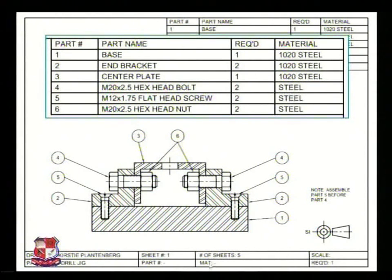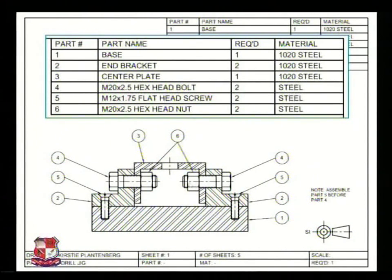Scale, number of sheets, sheet number, drawn by, part number, etc. are written on this drawing sheet. So this is the typical example of an assembly drawing.